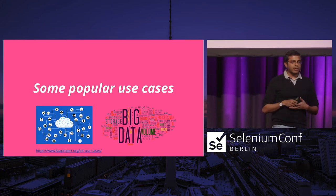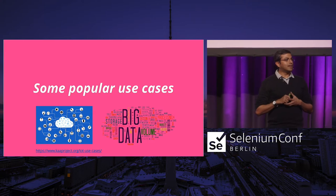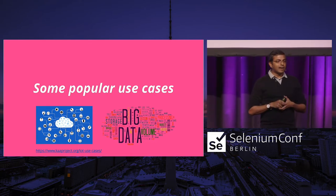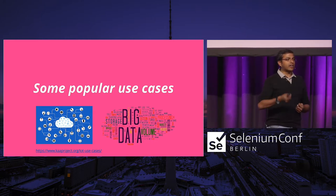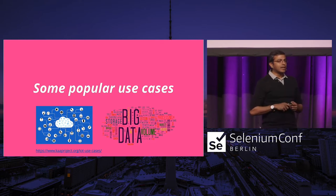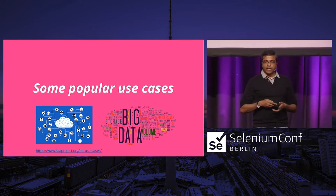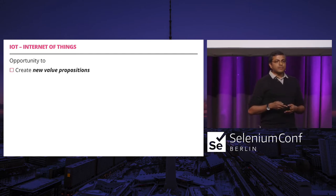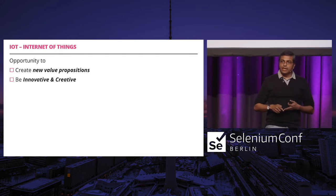Can anyone name a few applications of IoT or big data? Alexa, smart homes, smart cars — there are so many things. Simple things like a smart power strip you can toggle on and off using your mobile. There are so many different applications coming up as a result of these new terminologies where more value propositions are being provided to the consumer. IoT helps enable new value propositions for users and helps us be more innovative and creative.